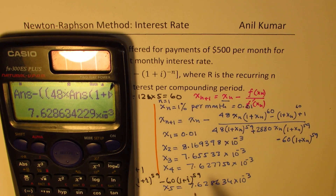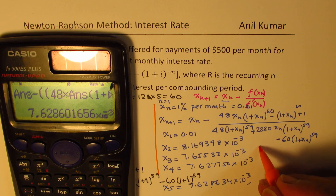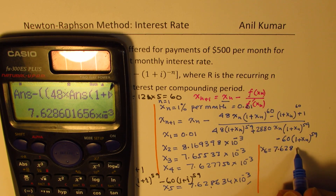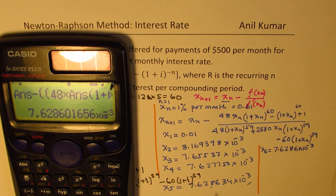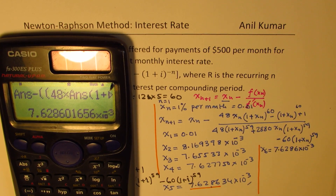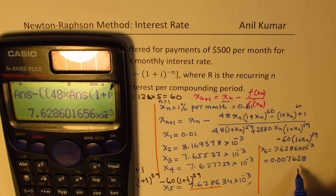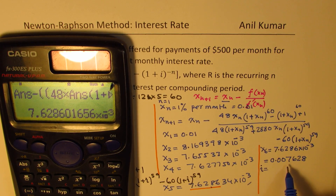Since the values are still slightly different at the fourth decimal, we do one more iteration. Our final value x_6 gives 7.6286 times 10^{-3}, which matches the previous result. All terms are now consistent. Converting this: 10^{-3} means three decimal places, so we get 0.007628 as our monthly interest rate.